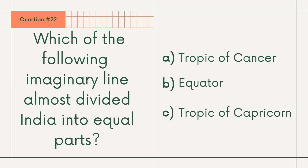Question 22: Which of the following imaginary lines almost divides India into equal parts? A. Tropic of Cancer, B. Equator, or C. Tropic of Capricorn. Answer: A. Tropic of Cancer.